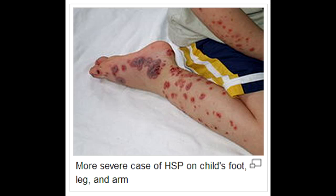What is Henoch-Schönlein purpura? Henoch-Schönlein purpura is a systemic vasculitis and is characterized by deposition of immune complexes containing the antibody IgA. This condition affects both the skin and kidneys.